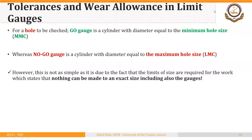For a circular hole to be checked, the go gauge is a cylinder with diameter equal to the minimum hole size — that is the MMC of the hole — and we are talking about a plug gauge here. Similarly, the no-go gauge is a cylinder with diameter equal to the maximum hole size, which is the LMC of the hole. This is just the opposite for external dimensions.